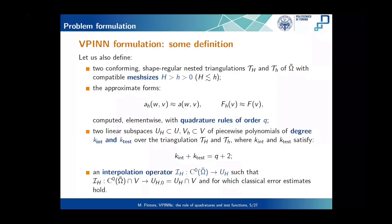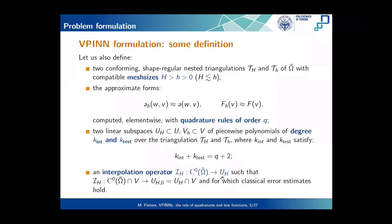To ensure good approximation properties, we want the two spaces to have the same dimension, and k_int and k_test have to satisfy a specific relation. Finally, we need an interpolation operator I_H that maps continuous functions to functions in U_H, i.e., piecewise polynomials of order k_int. This is a classical interpolation operator, and therefore we will use classical error estimates to control it.